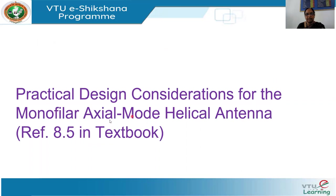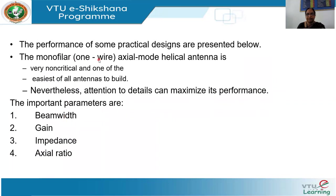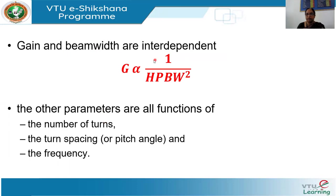Now coming to the practical design considerations of the monofilar axial mode helical antenna. Monofilar implies one wire. The main features of this antenna are that it is very non-critical and quite easy to build. Still, you can maximize its performance based on the following parameters: beam width, gain, impedance, and axial ratio. The gain G is proportional to 1 over the half-power beam width squared. The other parameters are all functions of the number of turns N, the turn spacing S or alpha, and the center frequency of operation of the antenna.